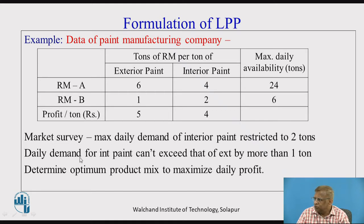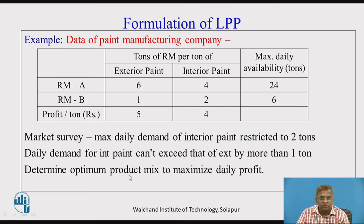Two lines below the table are concerned with market survey and demand aspects coming from the market situation. The last line reads: determine the optimum product mix to maximize the daily profit. So profit maximization is the main objective — which product in what quantity should we manufacture so that our daily profit will be maximum. That is the ultimate question.